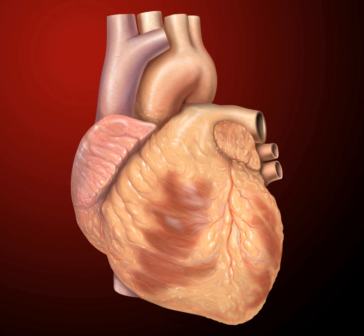The right atrium and the right ventricle together are sometimes referred to as the right heart; similarly, the left atrium and the left ventricle together are sometimes referred to as the left heart. The ventricles are separated from each other by the interventricular septum. The cardiac skeleton is made of dense connective tissue and gives structure to the heart. It forms the atrioventricular septum which separates the atria from the ventricles, and the fibrous rings which serve as bases for the four heart valves.